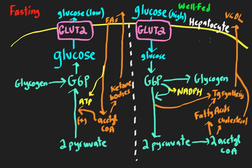Starting with the big picture — the major reactions and the flow of where glucose and these fatty acids are going — is very helpful to put it all in perspective of how these reactions are related to one another and how they're ultimately going to be regulated.